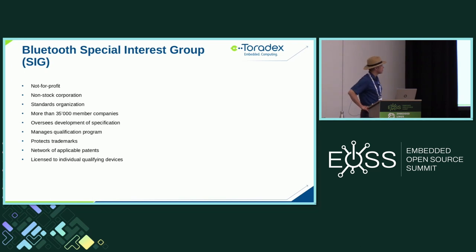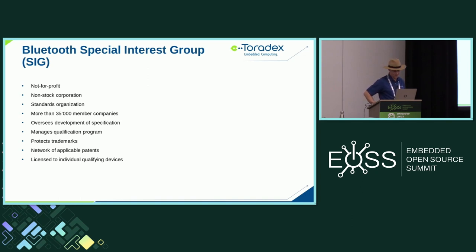The Bluetooth Special Interest Group is the non-profit, non-stock organization behind the standard. Starting with five companies, there are now more than 35,000 member companies. They oversee development of the specification — typically refreshed every year or two — and manage the qualification program and protect trademarks. They have a full network of applicable patents, and by becoming a member you can license those for qualifying devices.